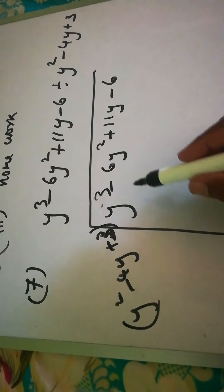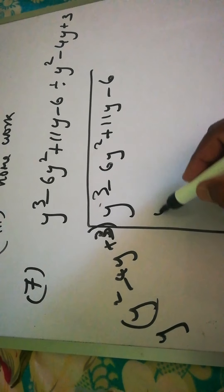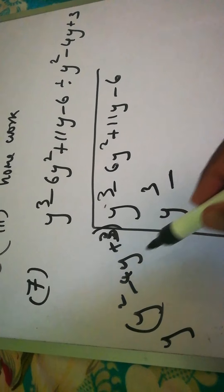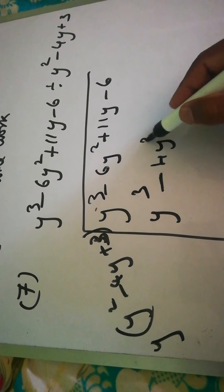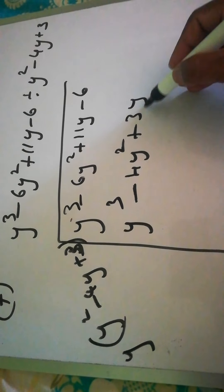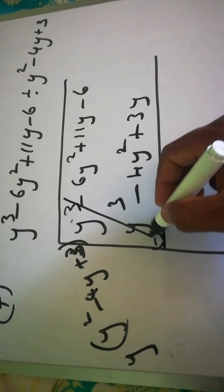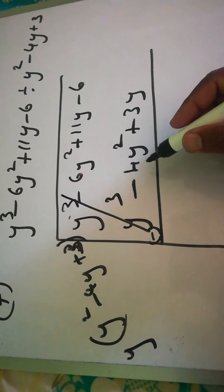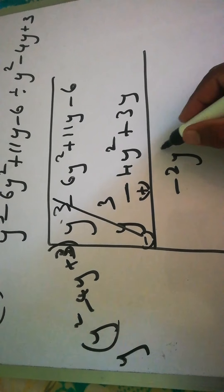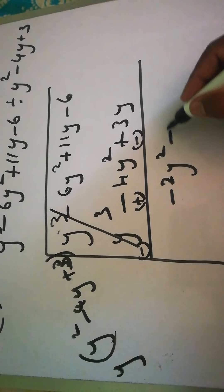To get y³ here, we have y² so we multiply by y. y into y² is y³. Since the symbol is minus, we write minus; y into 4y is 4y², and y into 3 is 3y. Now change the sign — plus becomes minus. After cancellation, -6 + 4 is -2y², and 11 minus 3 is 8y.